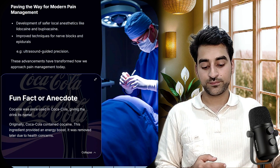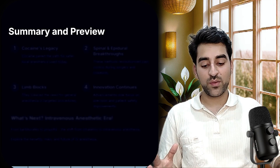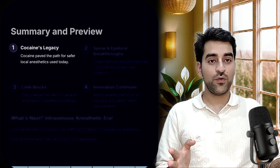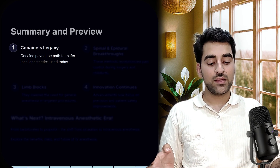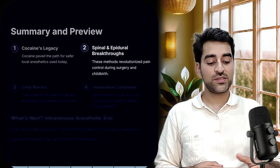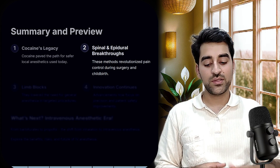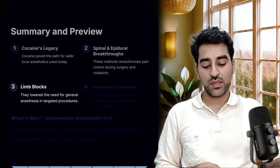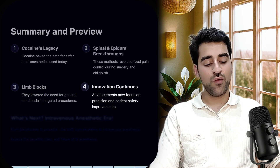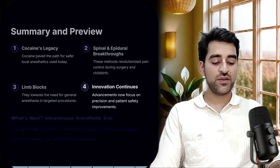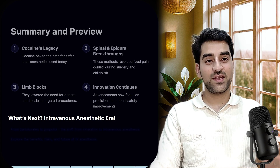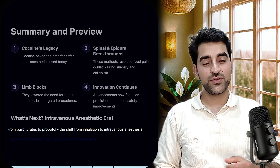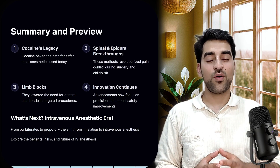In summary: cocaine's legacy paved the way for safer local anesthetics; spinal and epidural breakthroughs revolutionized pain control during surgeries and childbirth; limb blocks lowered the need for general anesthesia in targeted procedures; and continuous innovations now focus on precision and patient safety. In the next lecture, we'll cover the intravenous anesthetic era — barbiturates, thiopental, propofol, and the shift from inhalation to intravenous anesthesia. Thank you for joining me — see you next time!